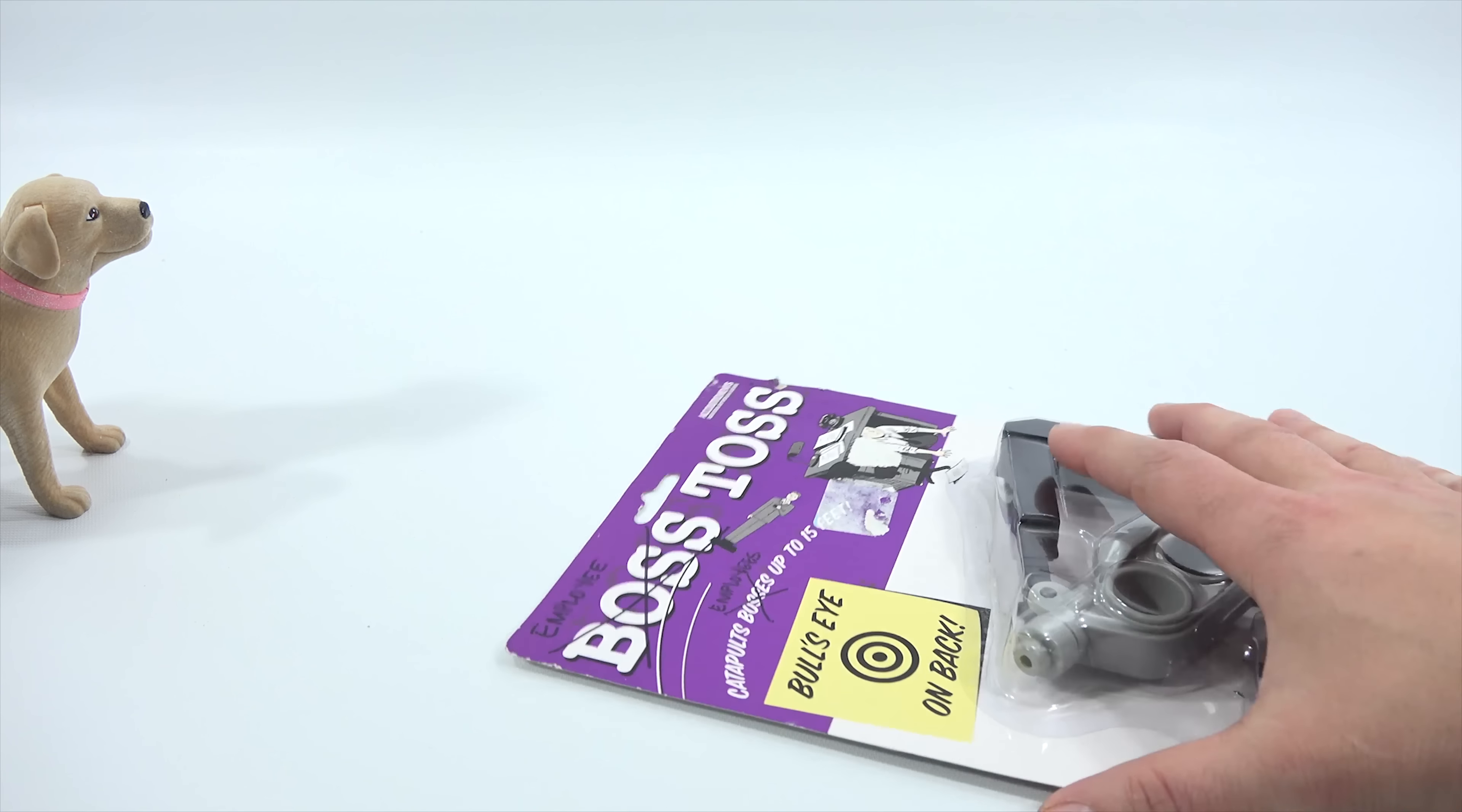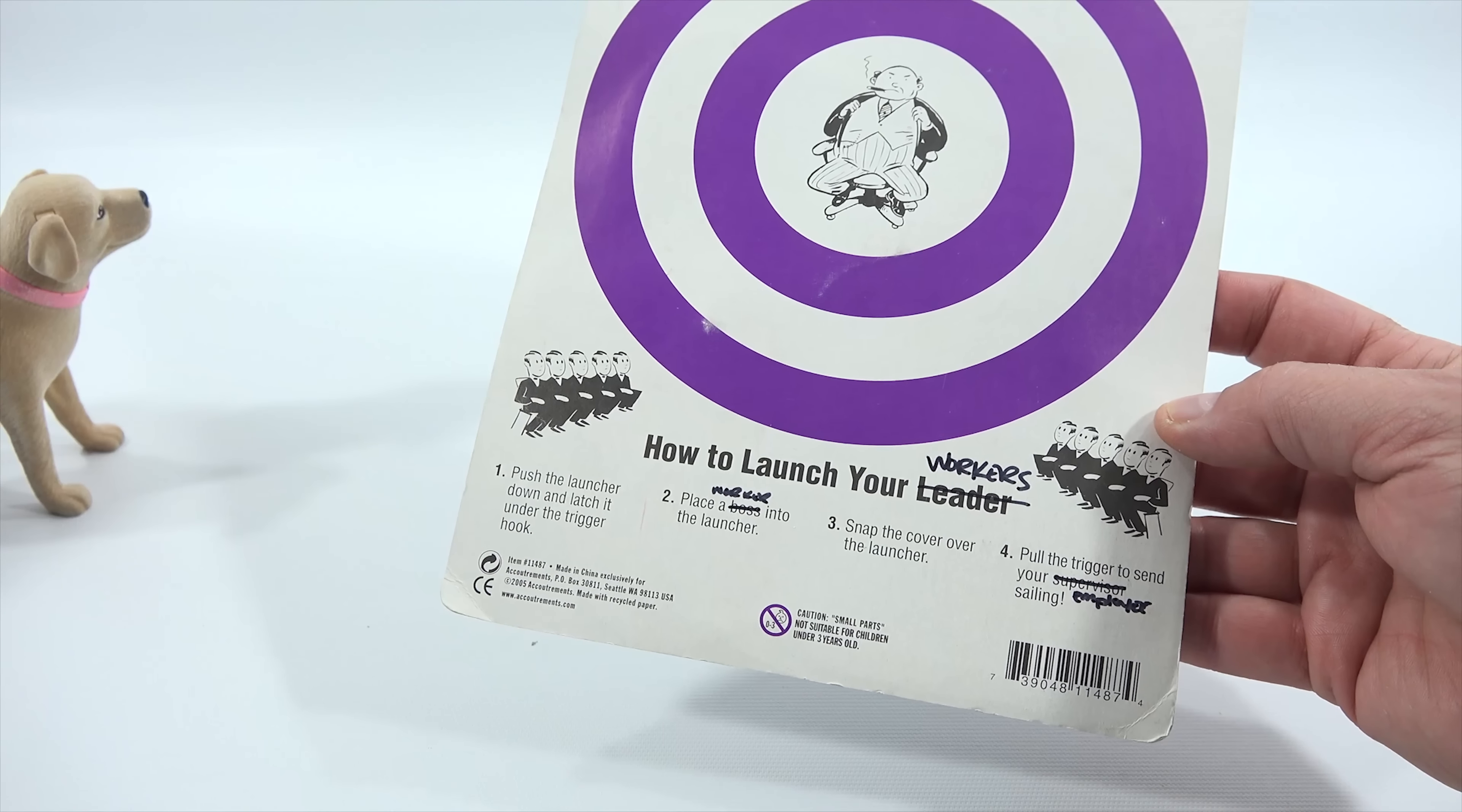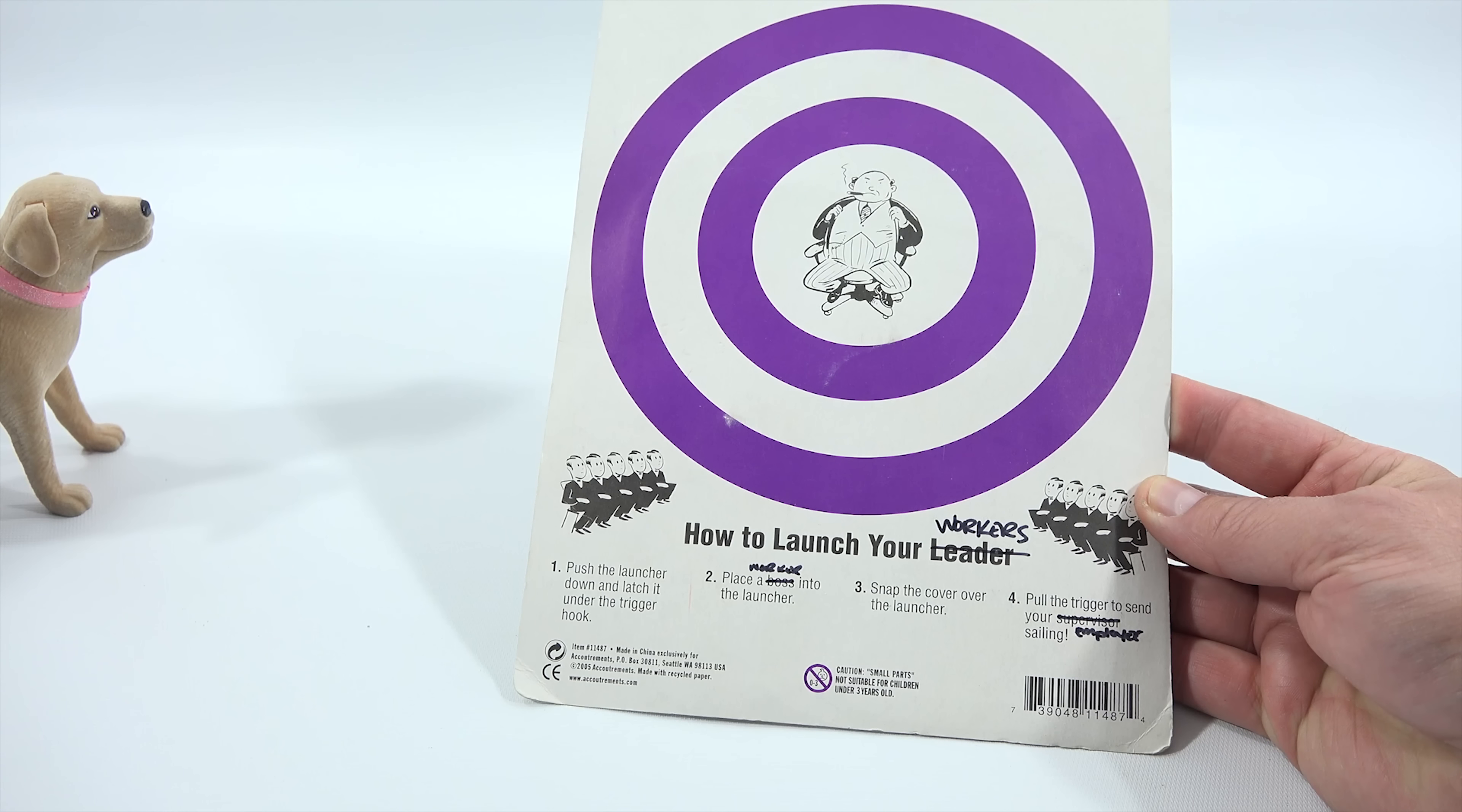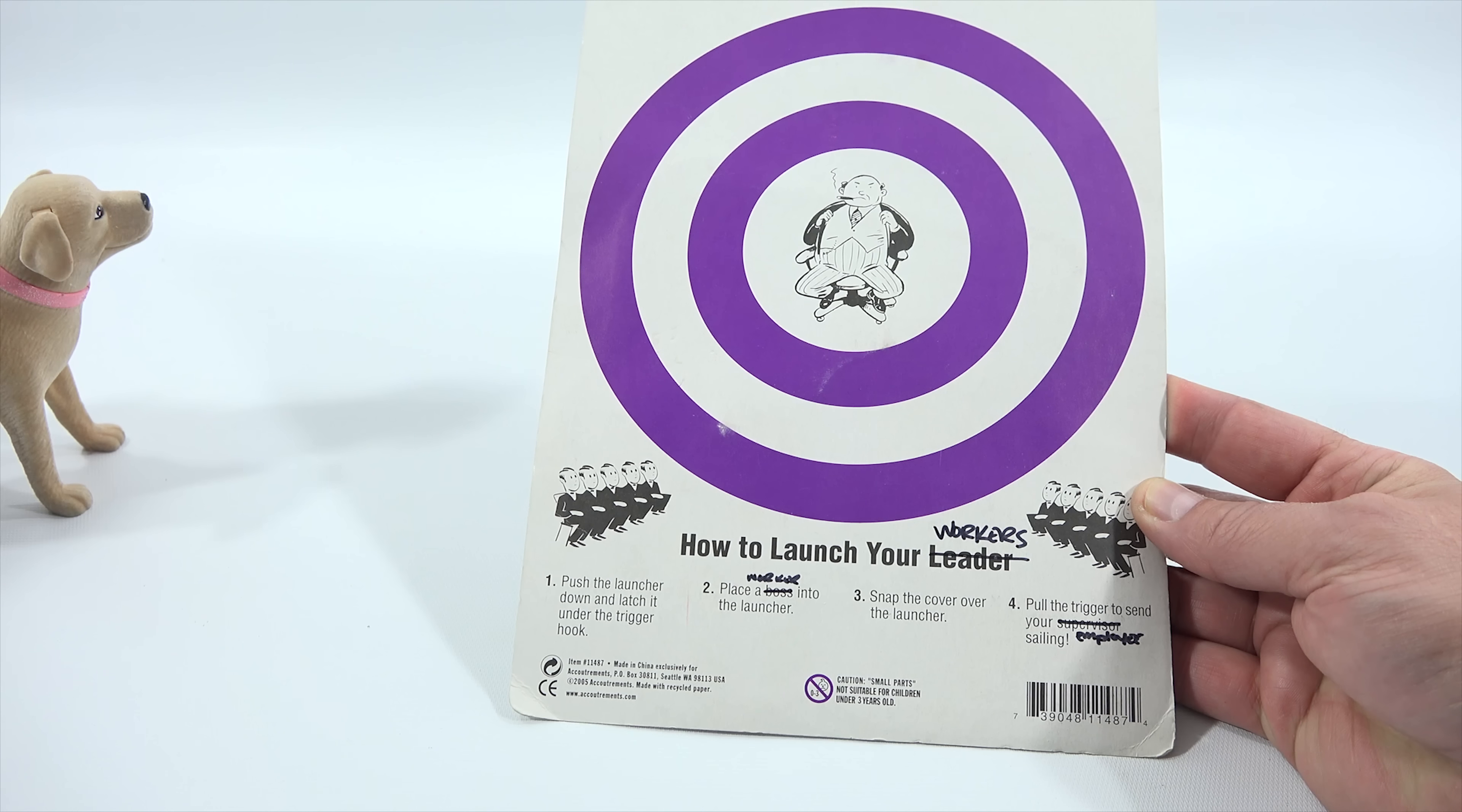So this also has the bullseye on the back. Look at that. The giant... Oh, fun. Employee city. See, someone crossed off. How to launch your workers. Yeah, that's weird.